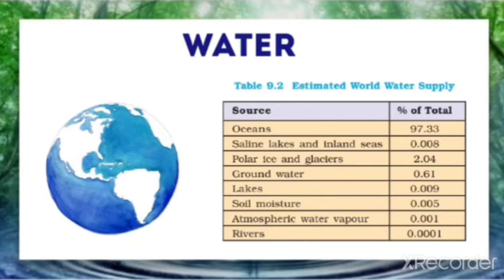On the earth, water is available from the following sources: oceans, saline lakes, polar ice, groundwater, lakes, soil moisture, atmosphere, water vapor, rivers, and so on.